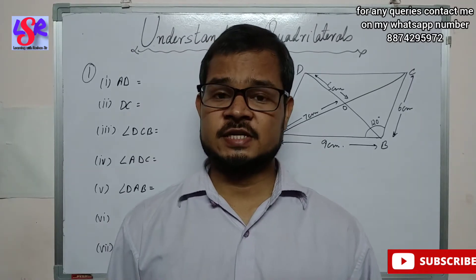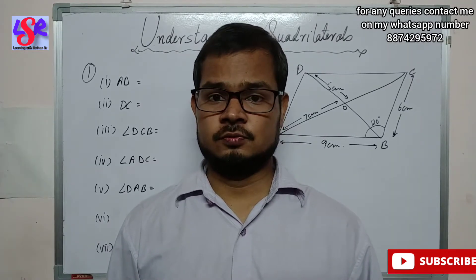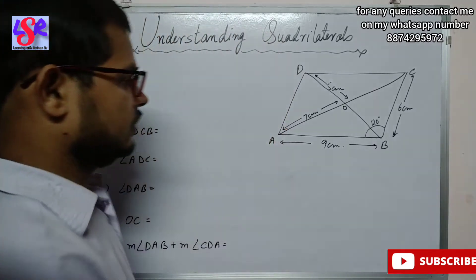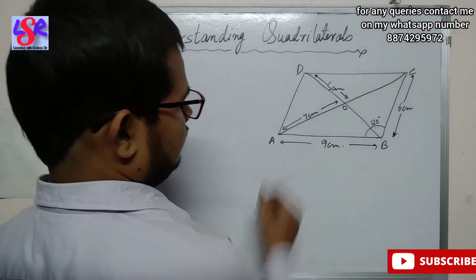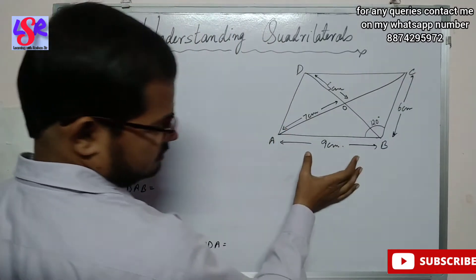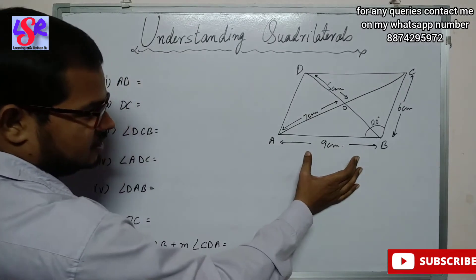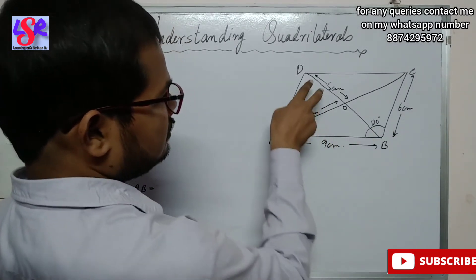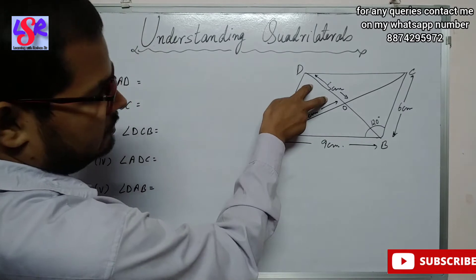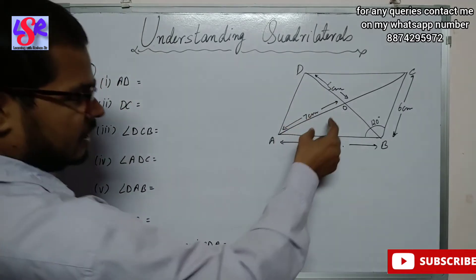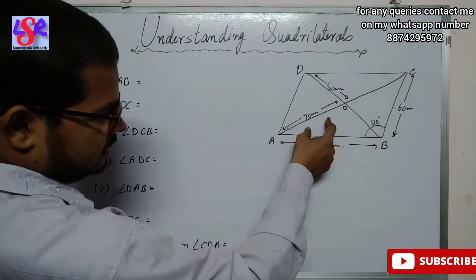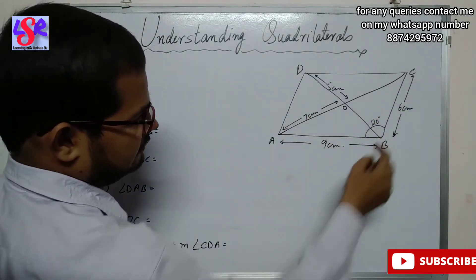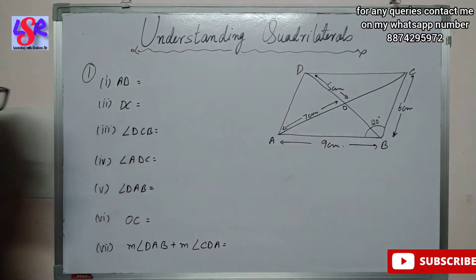Now let's start with exercise 13.2 and do question number one. Here we have a parallelogram ABCD in which AB is given as 9 centimeters, BC is 6 centimeters, the diagonal part DO is 5 centimeters, AO equals 7 centimeters, and angle ABC is given as 120 degrees.